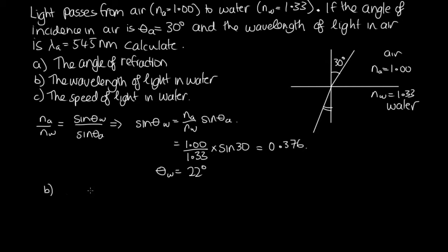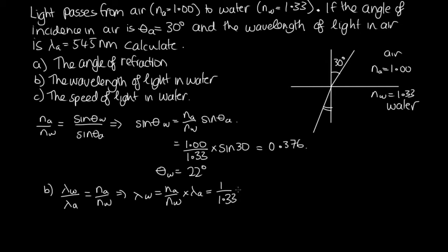Next, we calculate the wavelength of light in water. From Snell's law, λ_water / λ_air equals n_air / n_water. So λ_water equals (n_air / n_water) × λ_air, which is (1 / 1.33) × 545 nanometers. Solving this gives 410 nanometers, to three significant figures.